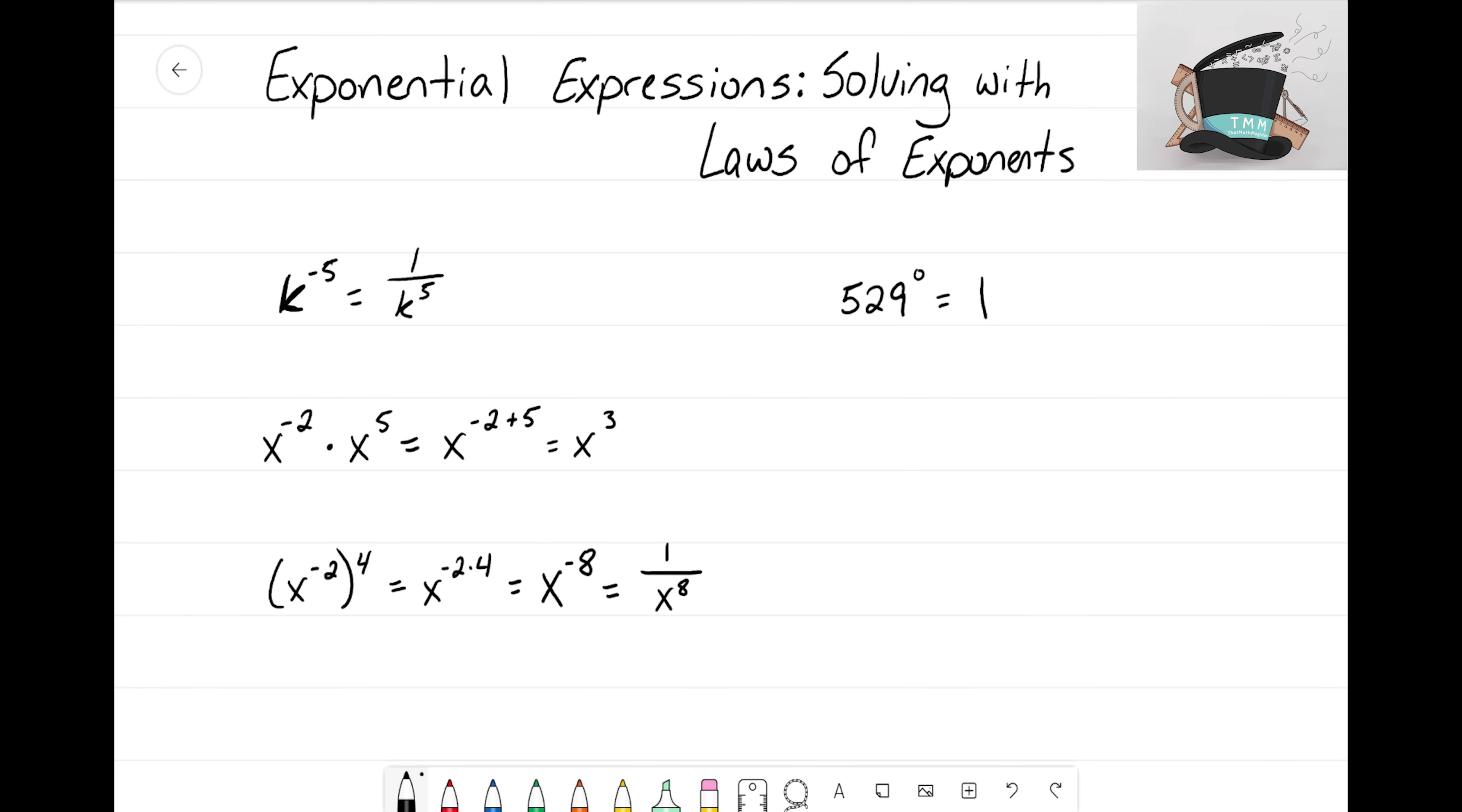What if we have y to the negative 2 over y to the negative 3? This is that second law of exponents where we need to subtract our exponents. I see we have y with negative 2 minus the negative 3.